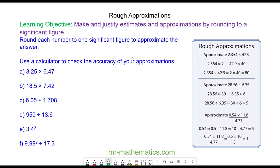Hello and welcome to our lesson on making rough approximations. We're going to estimate the solution to 3.25 times 6.47 by rounding to one significant figure.